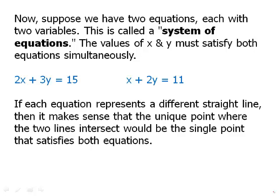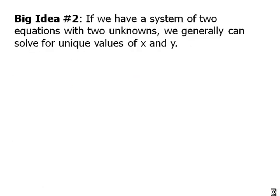So if you pick one random line and pick another random line, chances are very good that they're going to intersect somewhere. And they intersect at one point, and that one point would be the solution. So algebraically, when we're finding that solution, what we're doing is we're finding the point geometrically where they intersect. So big idea number two is, if we have a system of two equations with two unknowns, we generally can solve for unique values of x and y.